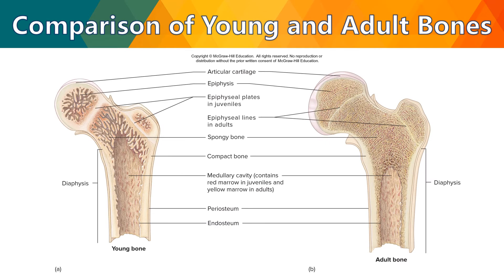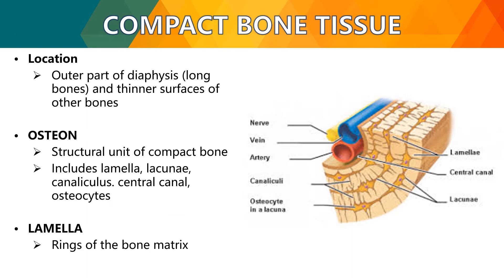Comparing young and adult bones: in young bones, the tissue found is most likely spongy or cancellous, but when it matures, most of this tissue becomes compact. For compact bone tissue, it is located in the outer part of the diaphysis of long bones and the thinner surfaces of other bones. The structural unit of compact bone is the osteon, which includes the lamella, lacunae, canaliculus, the central canal, and osteocytes.